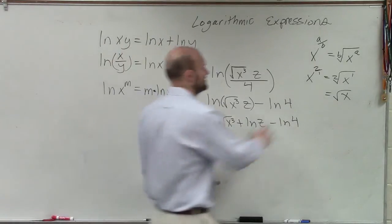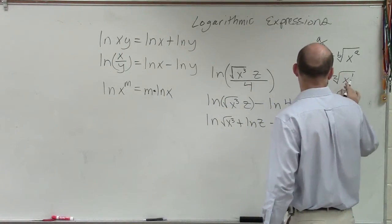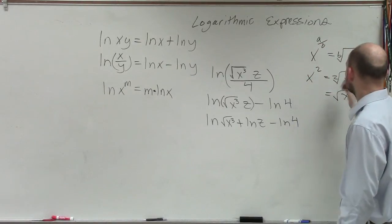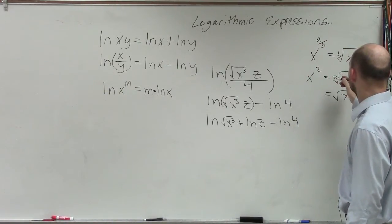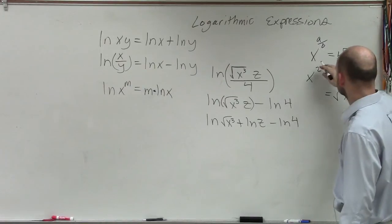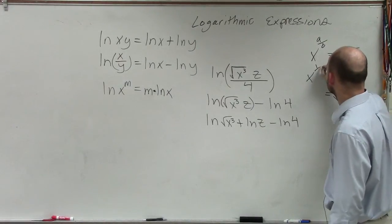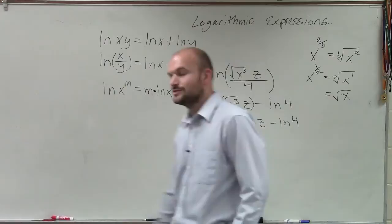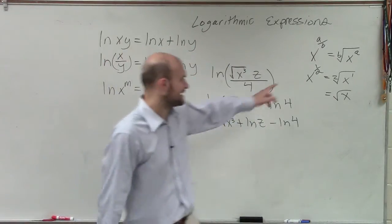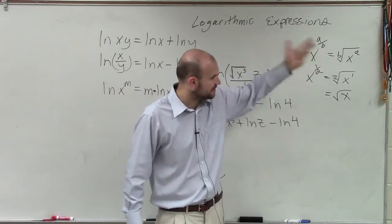Sorry, it's supposed to be x to the 1/2, not x squared. x to the 1/2 - the b goes in front. There we go. So therefore, this is really x cubed raised to the 1/2 power. Does anybody remember what we do when we have a power raised to another power? Multiply. Good.